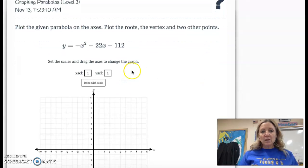I picked this one because it had several things. First of all, it has a negative coefficient on the leading term. So the first thing I'm going to do is factor out a negative sign, which will make the x squared positive, make the 22x positive, and make the 112 positive as well.